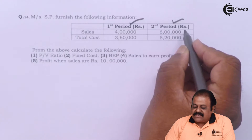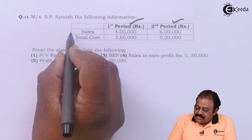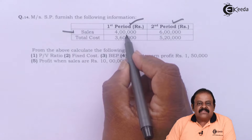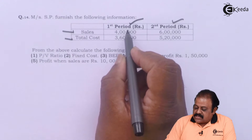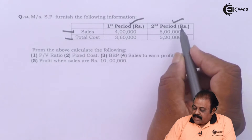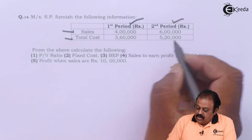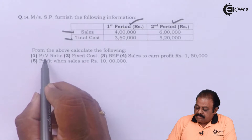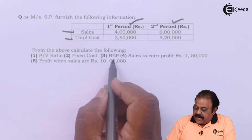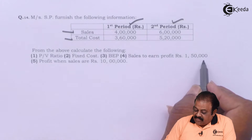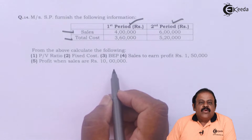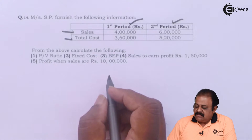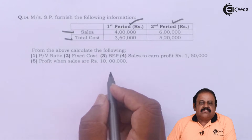Sales information: first year four lakhs, second year six lakhs. Total cost: first period three lakhs sixty thousand, second period five lakhs twenty thousand. We are required to calculate PV ratio, fixed cost, break-even point, sales to earn a profit of one lakh fifty thousand, and profit when sales are ten lakhs.